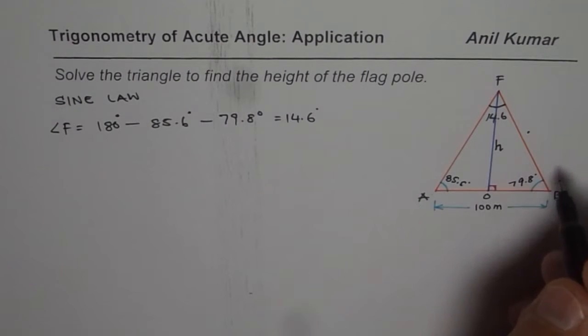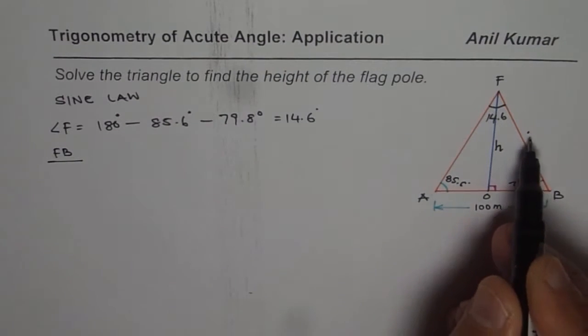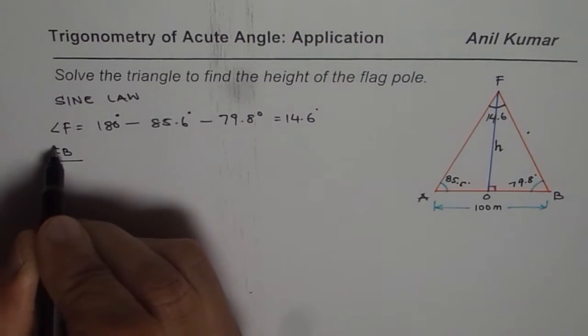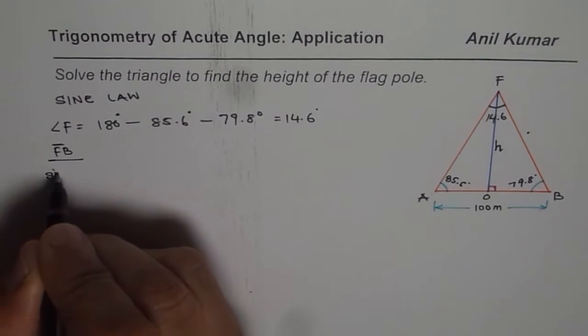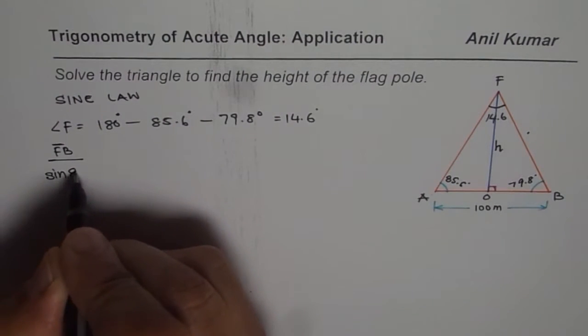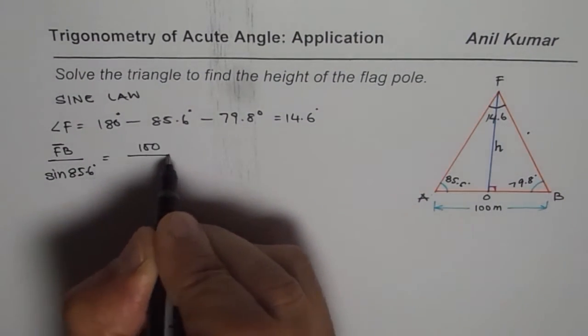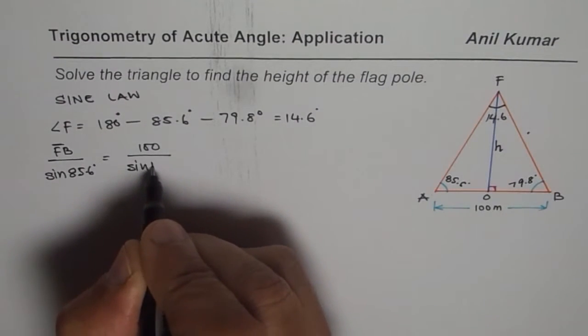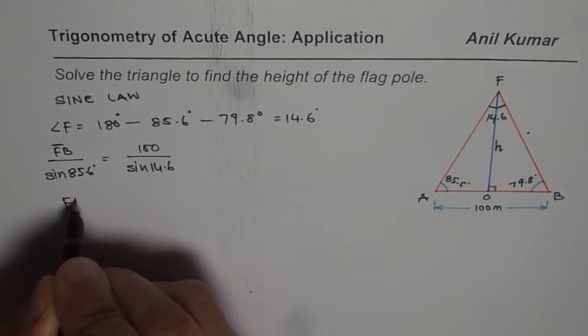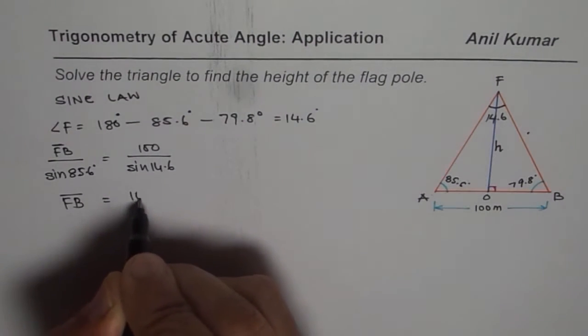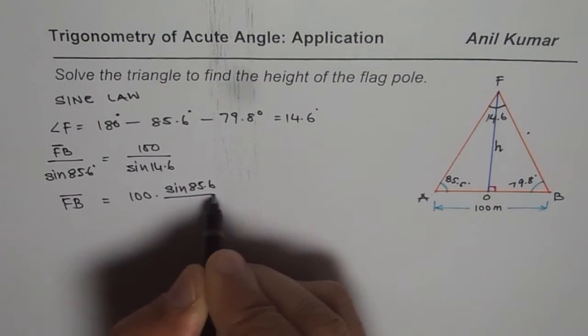Whenever I apply sine law I write the side which I want to find first. So F B over sine of 85.6 should be equal to the known side of 100 meters divided by sine of 14.6. Now cross multiply. So we get length F B is equal to 100 times sine of 85.6 divided by sine of 14.6. Let's use the calculator.